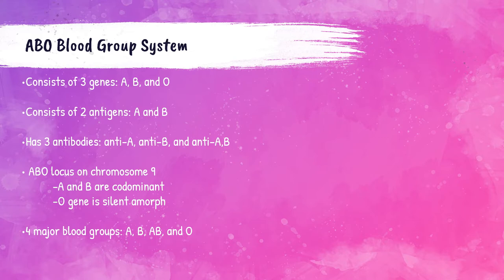The ABO blood group consists of three different genes: an A gene, a B gene, and an O gene. The locus for these genes is located on chromosome number nine. Along with these genes, there are two different antigens in this blood group system: A antigen and B antigen, which are present on the surface of the red blood cell. It's important to know that there is no O antigen in this blood group system, although there is an O gene, because the O gene is considered a silent amorph — no antigen is produced from its inheritance.